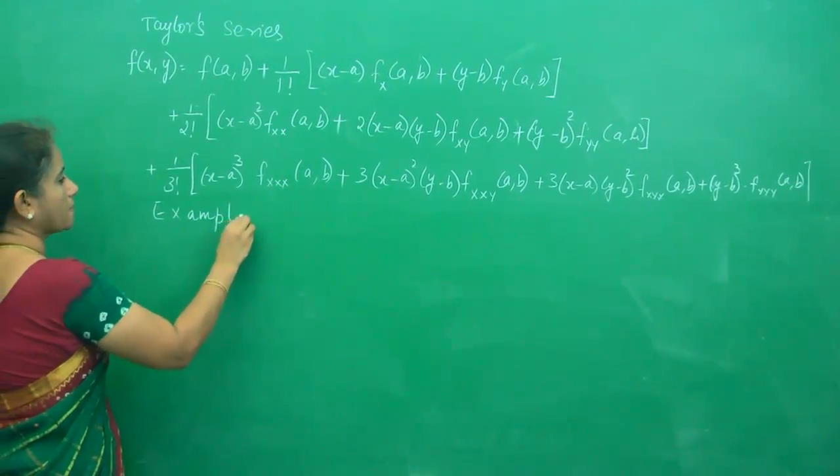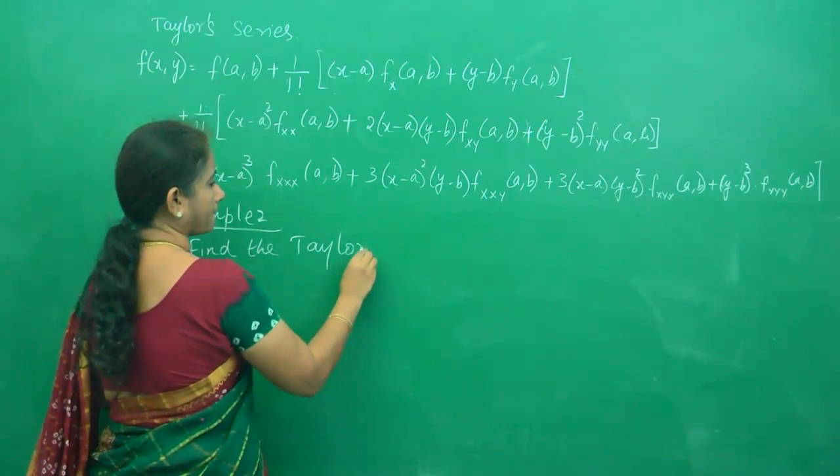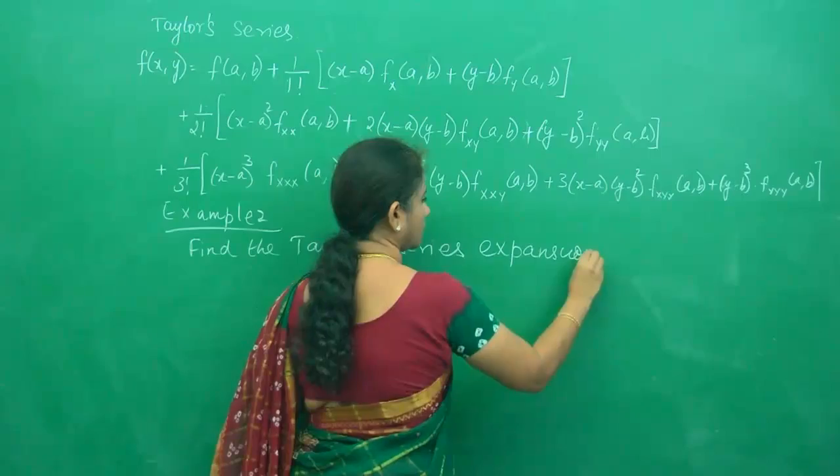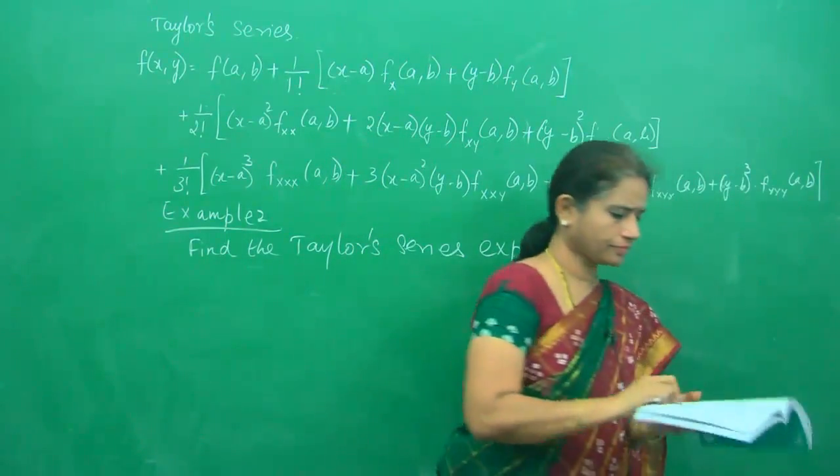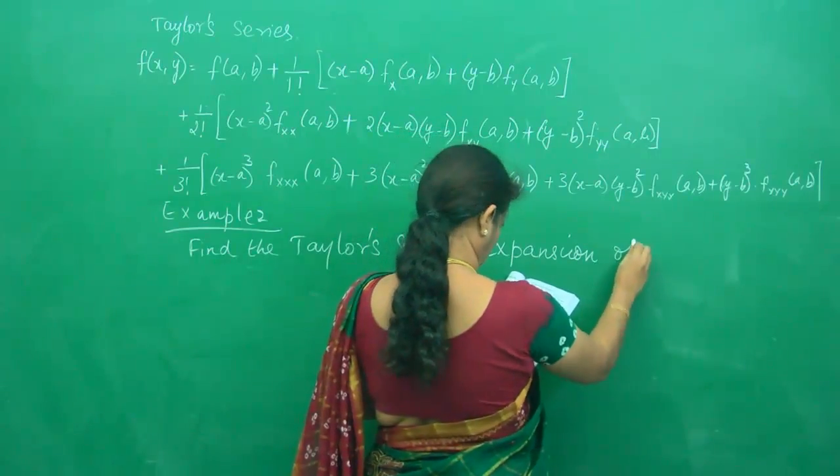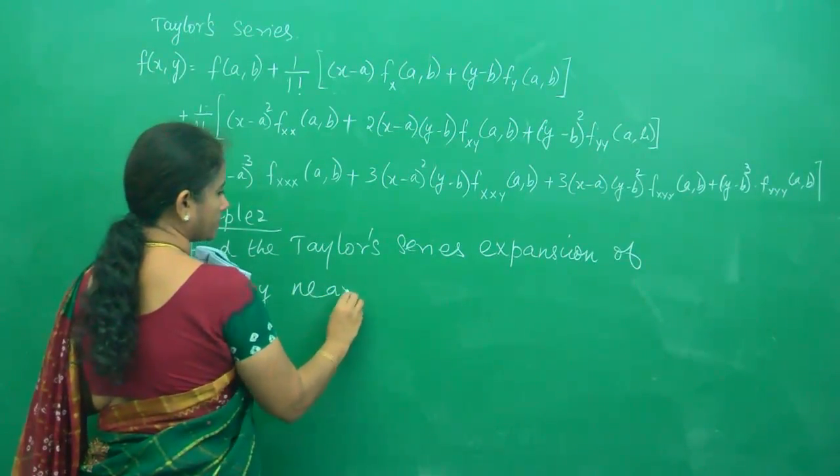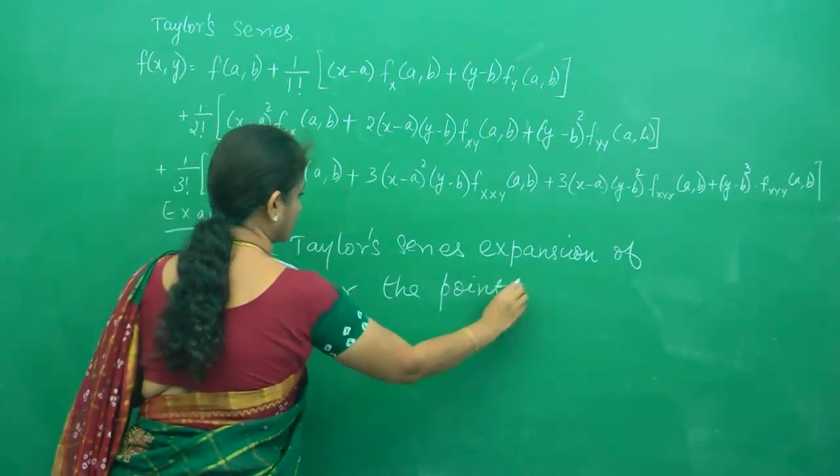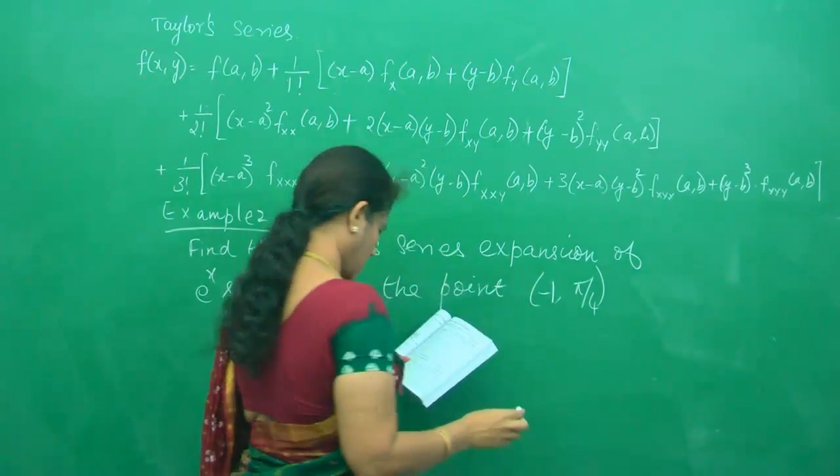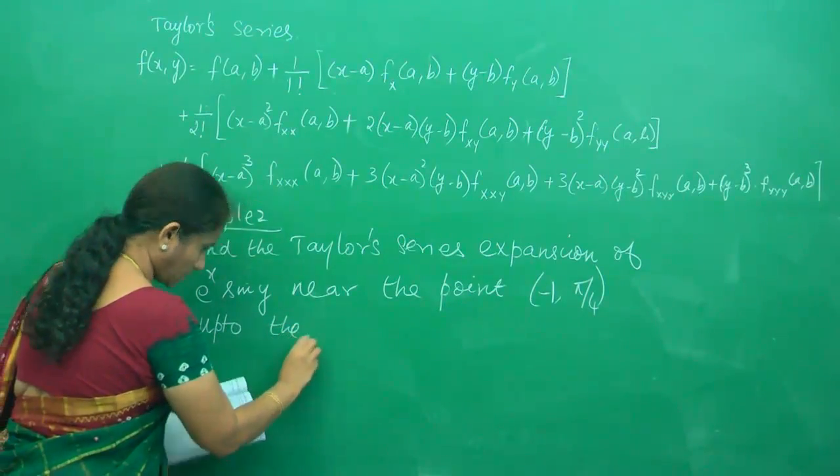I write the question. Example 2: Find the Taylor series expansion of e^x sin y near the point (-1, π/4) up to the first degree terms.